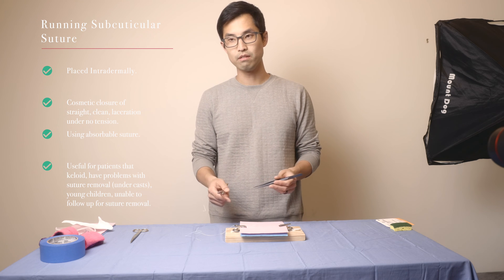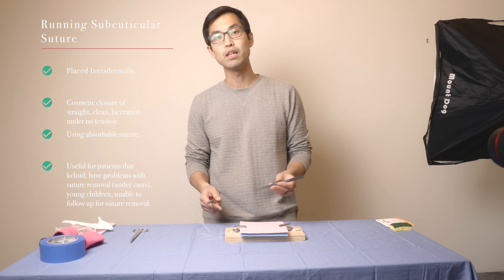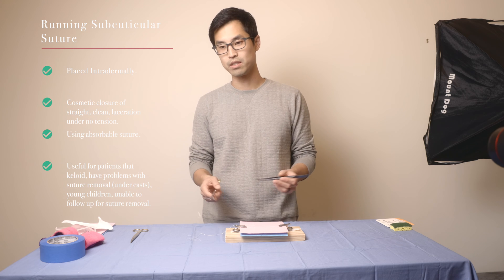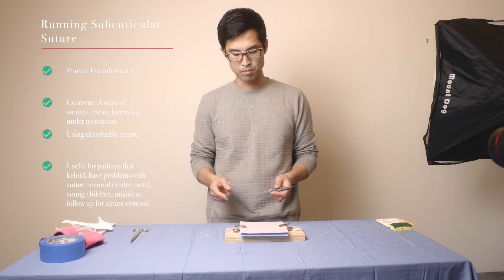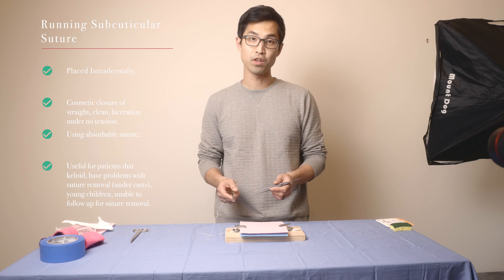Typically, you'll be given a very small, low profile suture. It could be something like monocryl or biocin that's absorbable, or some people like to use very thin vicryl.